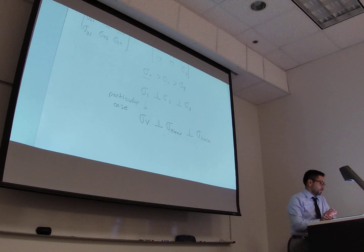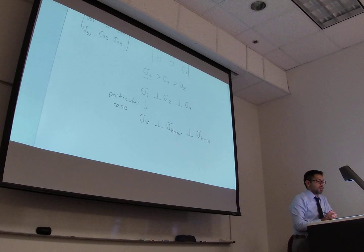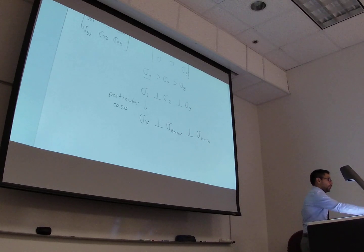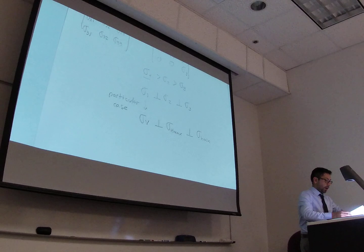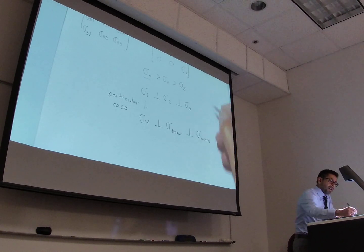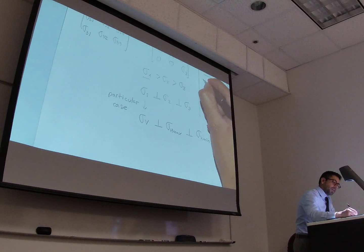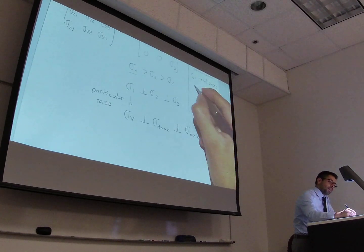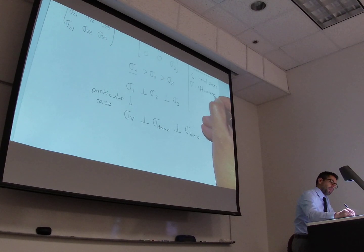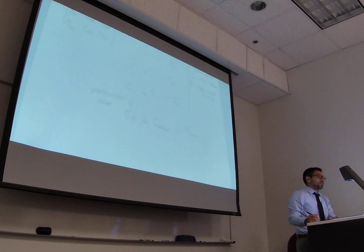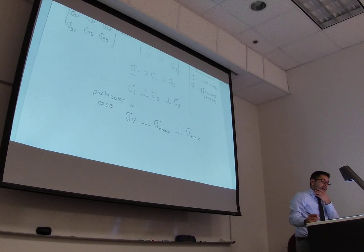A student asks: is there a difference between writing sigma h max and S h max, and when would you use one or the other? For the remainder of this course, we are going to use a convention in which S denotes total stress and sigma denotes effective stress. So that's going to be our convention, and right now I'm just talking about effective stresses.